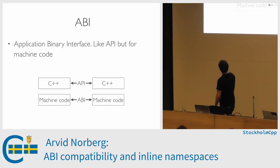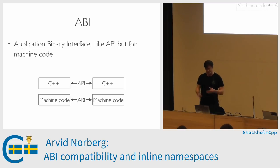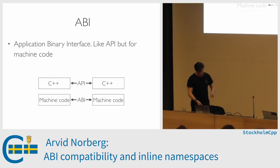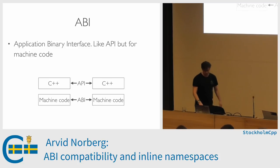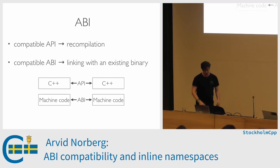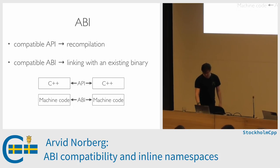ABI is Application Binary Interface. It's like an API but for machine code. As this illustration shows, C++ source code files communicate via an API, and machine code or binaries communicate over an ABI. They're related in that sense, but there are more details involved in the ABI.